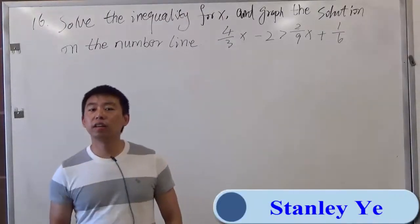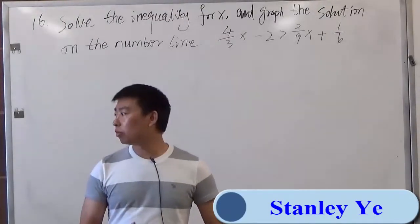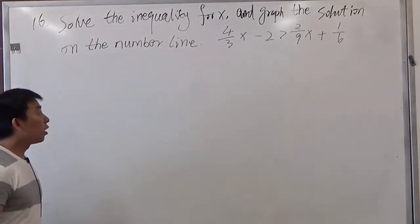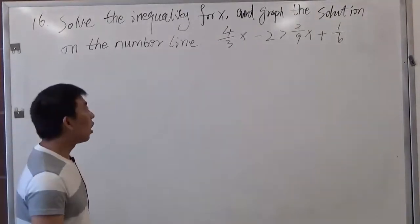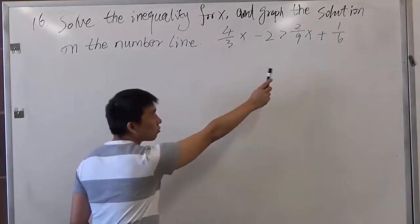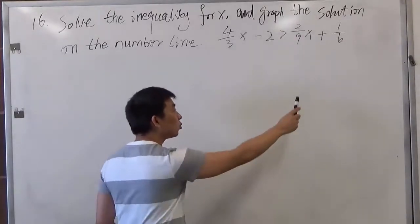Hello, welcome to Helping Maths.com. In this video, we're going to look at problem 16. Solve the inequality for x and graph the solution on the number line. We have 4 over 3x minus 2 is greater than 2 over 9 times x, plus 1 over 6.